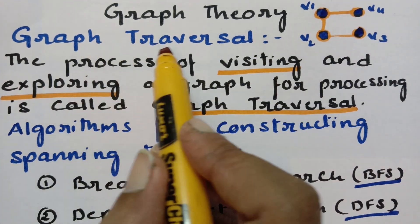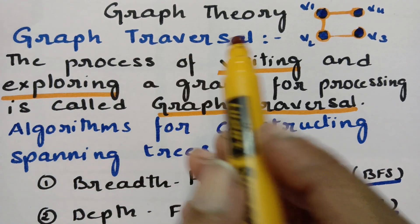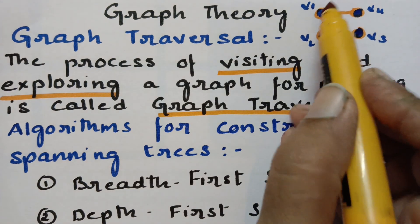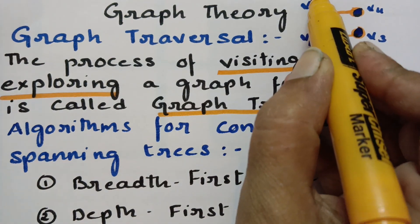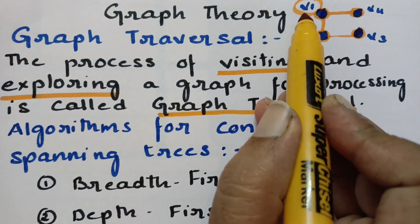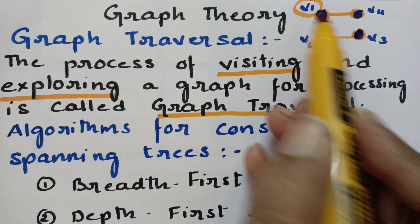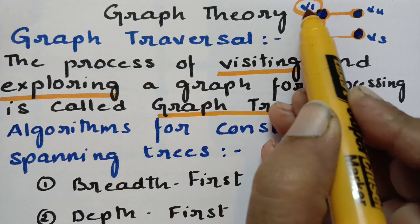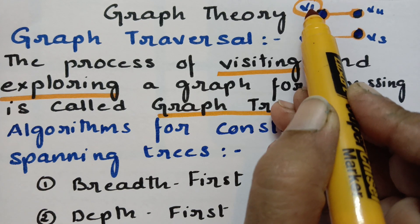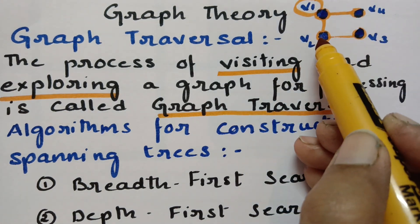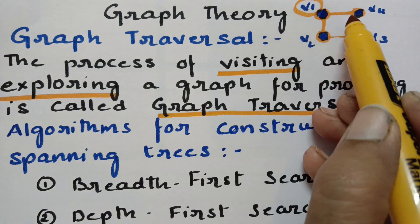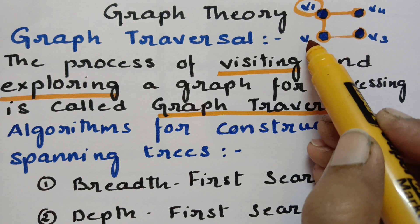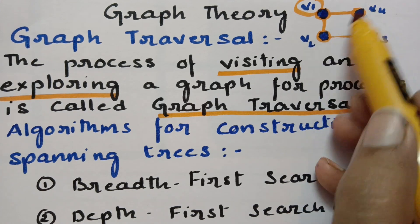And now what is graph traversal? Graph traversal is nothing but first we have to visit one certain vertex. So if I visit this one, this is the visited vertex. If I visit vertex V1, next I have to explore the graph. Exploring means after visiting this vertex, we have to find out how many adjacent vertices there are. So this V1 is connected with V4 and V2 — those are the adjacent vertices.